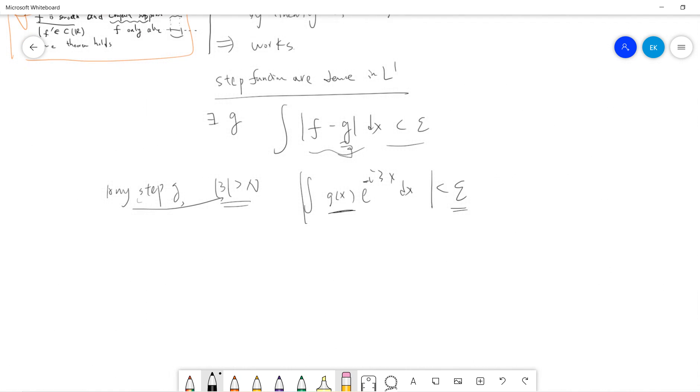So the rest is just using this to bound this guy. Okay, so the idea is very simple that we can bound this guy by f minus i plus cx dx. Let me just try it step by step.